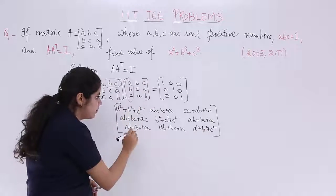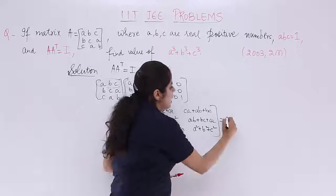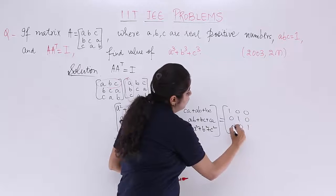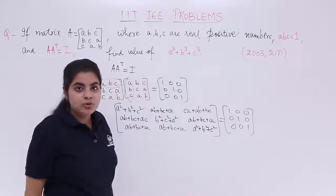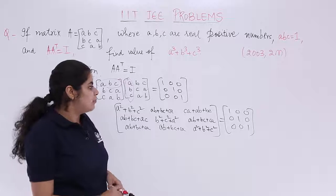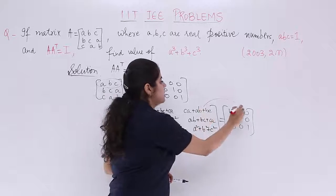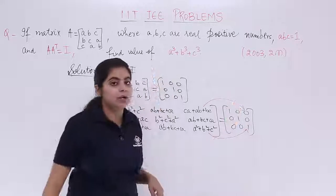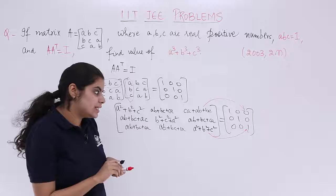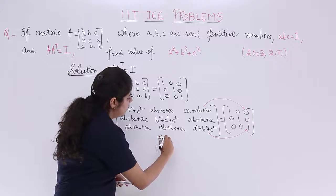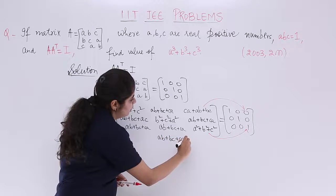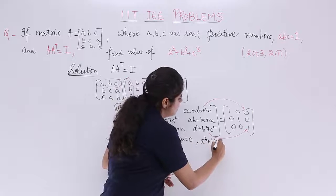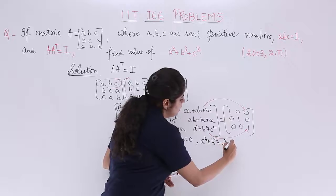Enclosing this in matrix form and setting it equal to I = [1,0,0 / 0,1,0 / 0,0,1], we now compare. By comparison: AB + BC + CA = 0, and A² + B² + C² = 1. These are the two equations we have obtained. We will use both of them, along with the condition ABC = 1.